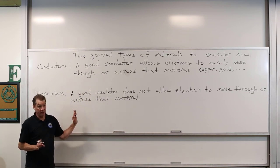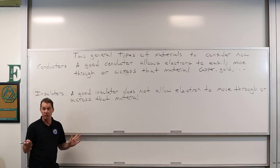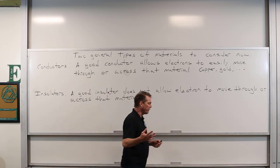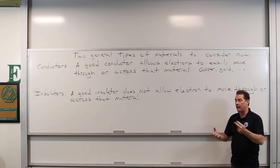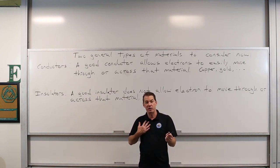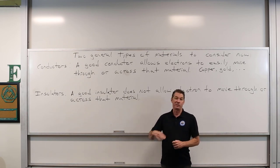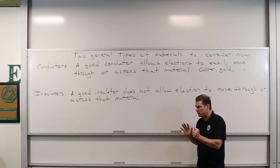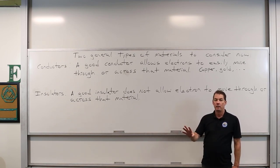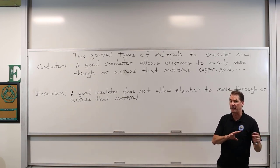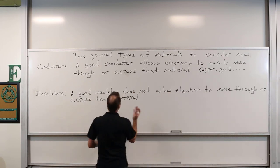With an insulator, you can charge it — more electrons than protons or fewer electrons than protons — but the electrons stay wherever you put them. Take a balloon: if you rub it with a cloth, you deposit electrons onto the balloon at the location you rub it, because rubber has a high electronegativity. Those electrons don't move around the balloon — they stay right where you put them. They can't move across or through the surface because rubber is a really good insulator.